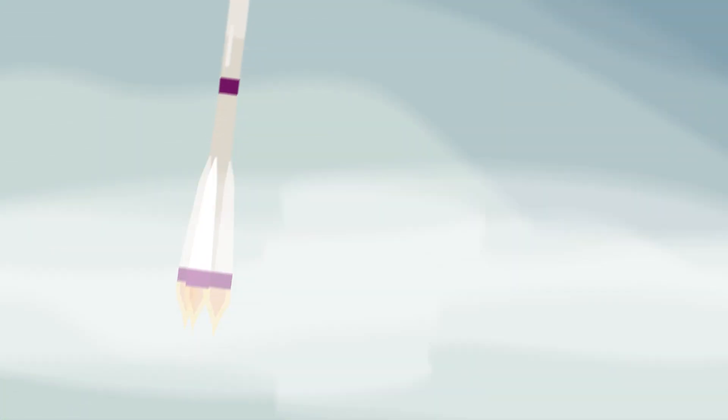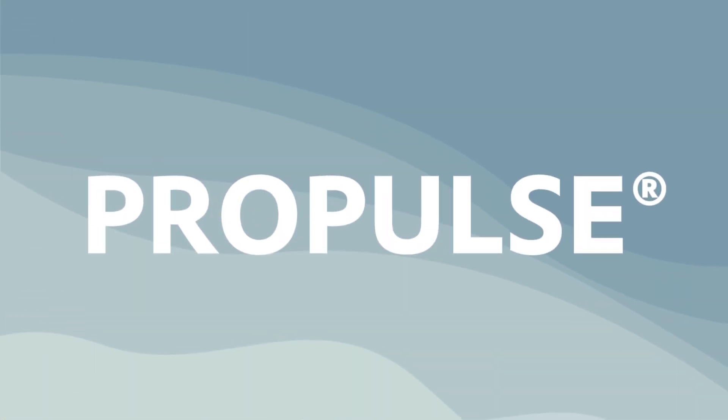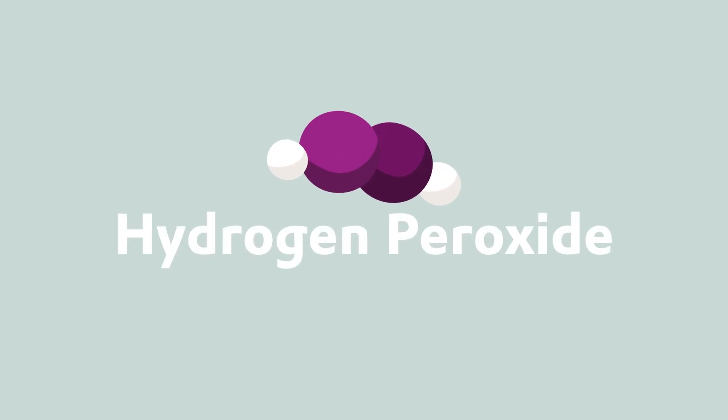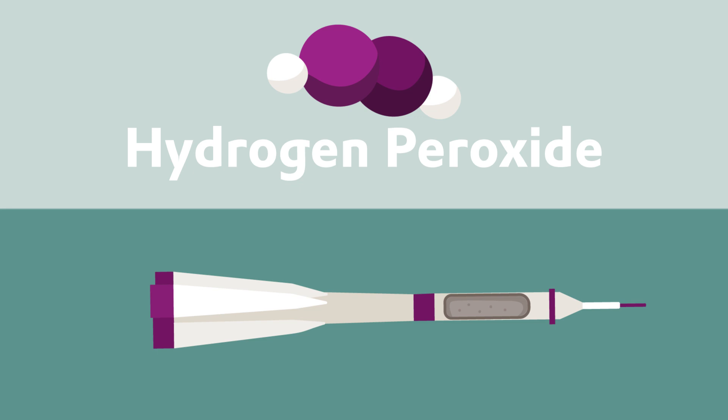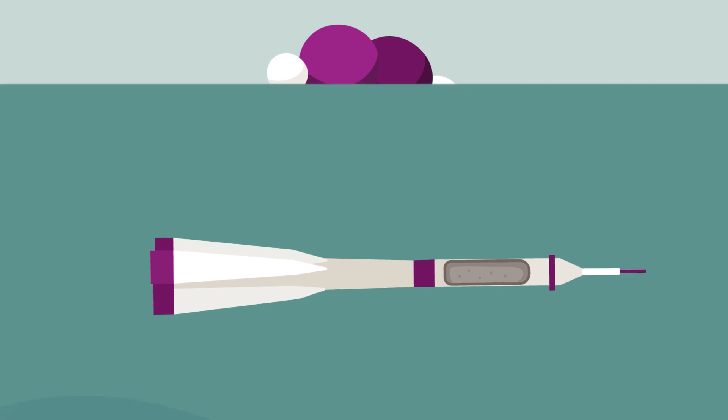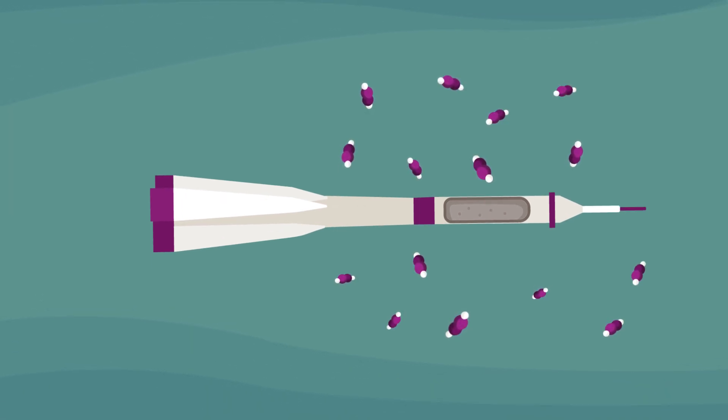That's where Evonik comes in with Propulse. Hydrogen peroxide from Evonik has been used in the Soyuz rocket for many years. The energy stored inside the small molecule drives the fuel pumps when the molecule decomposes.